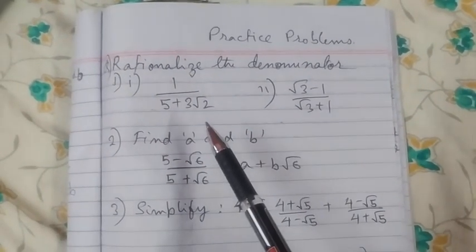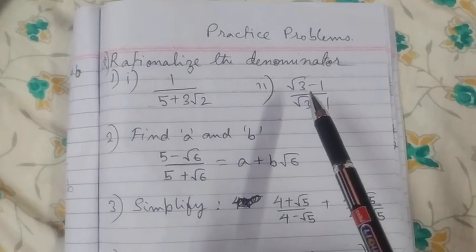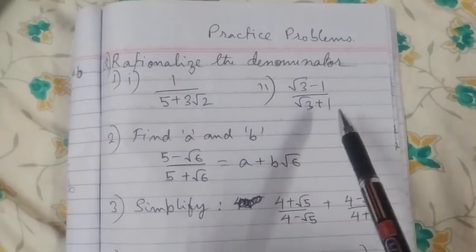Rationalize the denominator: 1 by 5 plus root 2, and here it is root 3 minus 1 by root 3 plus 1.